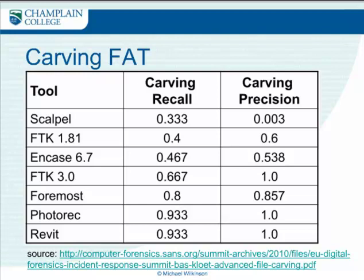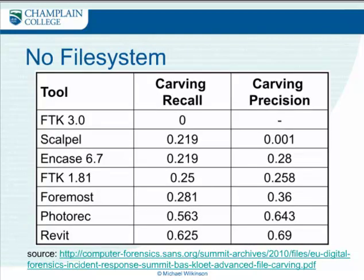Looking at the carving recall — the ability to recover files and how accurately — you can see here that where the filesystem is known, PhotoRec and Revit take advantage of that knowledge and recover very nearly everything, compared to tools like Scalpel which have various degrees of success. FTK3 also has pretty reasonable results. When there is no filesystem information available and the data has been manually created and formatted all over the place, you get very different results, though PhotoRec and Revit are still very much up there.